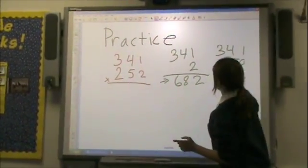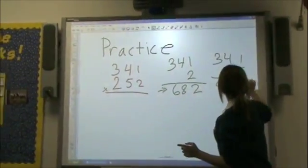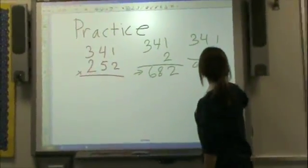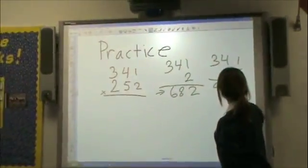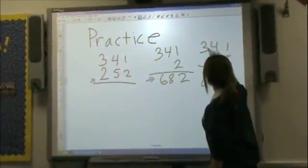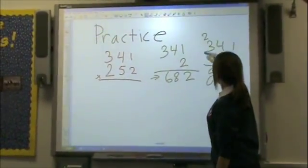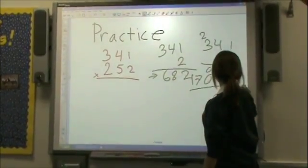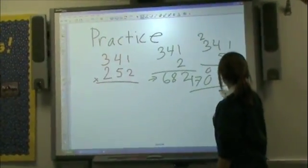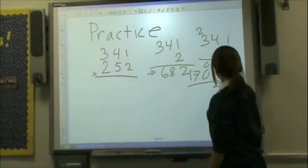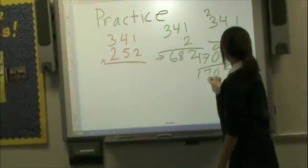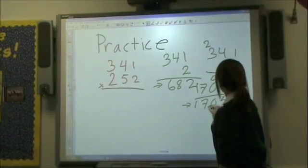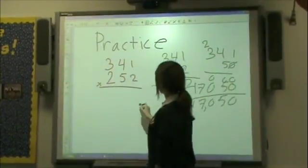For the tens-place step, 341 times 50, we place a zero in the ones column and then work through the multiplication: the result is 17,050.